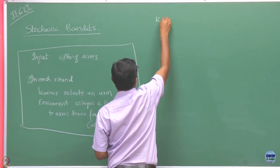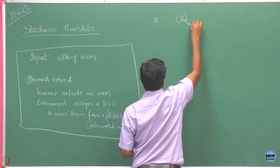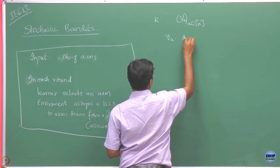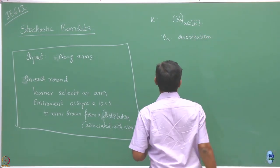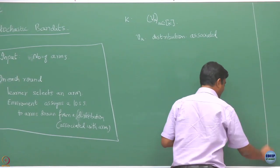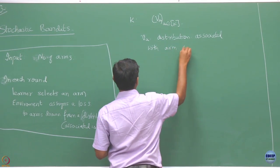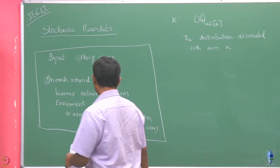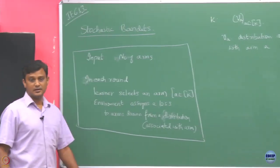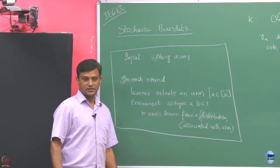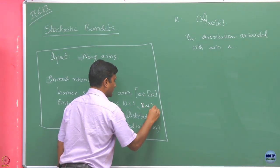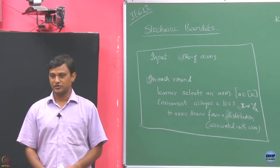Let us say there are k arms and I am going to denote mu_A. What is mu_A here? mu_A is the distribution associated with arm A. We select an arm A belonging to k, and then the environment assigns a loss x which is drawn from mu_A, the distribution associated with that arm.